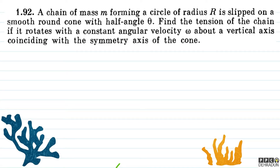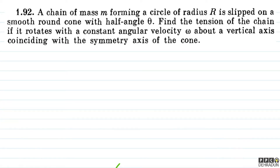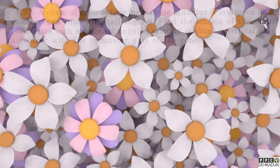The question says: a chain of mass M forming a circle of radius capital R is slipped on a smooth round cone with half angle theta. Find the tension of the chain if it rotates with a constant angular velocity omega about a vertical axis coinciding with the symmetry axis of the cone.